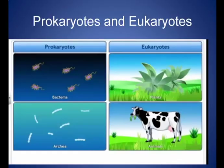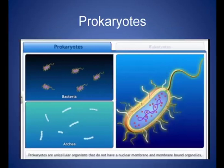Living organisms are also classified as prokaryotes and eukaryotes based on the organization of cellular structure. Prokaryotes are unicellular organisms that do not have a nuclear membrane or membrane-bound organelles. The genetic material is freely movable inside the cell, not bounded by a particular membrane. Examples of prokaryotes include bacteria and archaea.